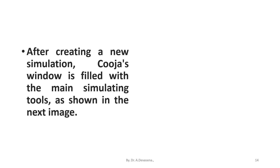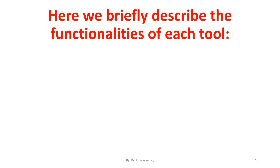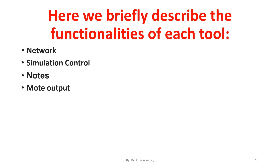After creating a new simulation, Koja's window is filled with the main simulating tools as shown in the next image. Here we briefly describe the functionalities of each tool: Network, Simulation Control, Nodes, Mote Output, and Timeline tool.